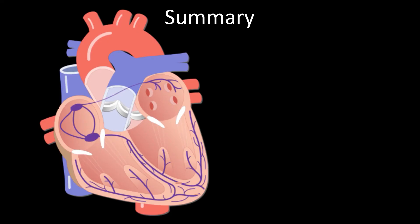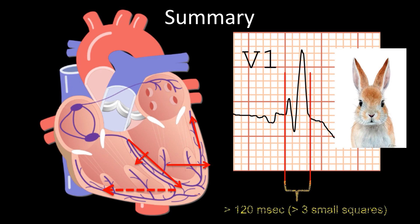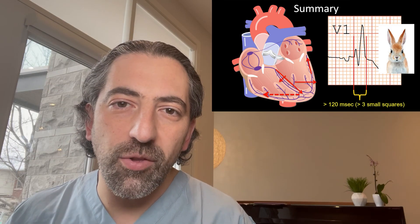In summary, in patients with right bundle branch block there is normal depolarization of the left bundle, leading to normal depolarization of the septum from left to right and normal depolarization of the left ventricle. However, there is slow depolarization of the right ventricle, leading to a large broad R prime in V1 with a QRS complex of more than 120 milliseconds, which is more than three small squares. I hope that was useful — thank you very much.